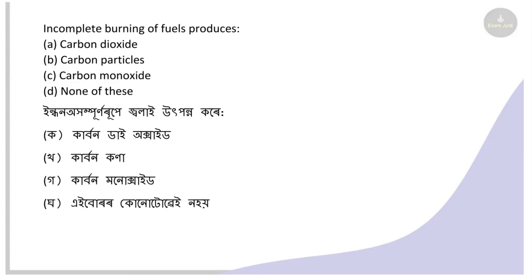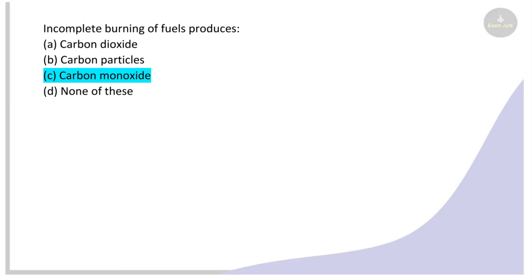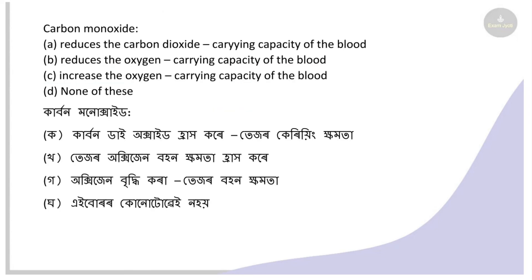Next: Incomplete burning of fuel produces what? Options: carbon dioxide, carbon particles, carbon monoxide, none of these. The right answer is carbon monoxide. Incomplete combustion of fuel produces carbon monoxide gas.